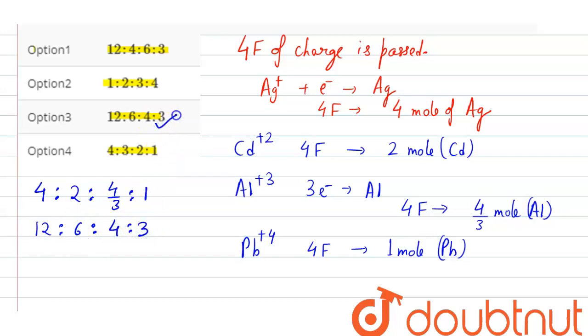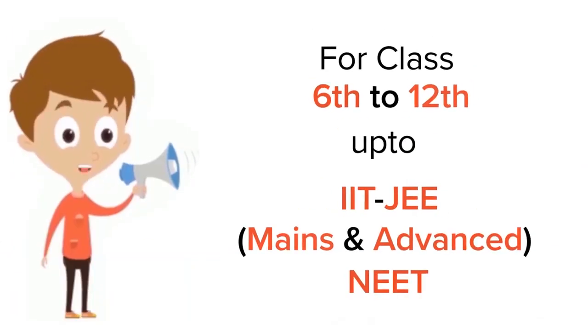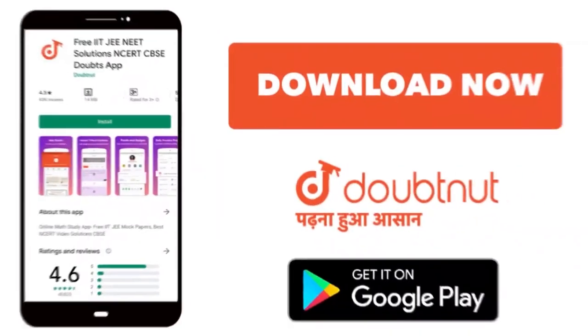That means the correct option is the third option. Thank you. For Class 6 to 12, IIT-JEE and NEET level. Trusted by more than 5 crore students. Download Doubtnet app today.